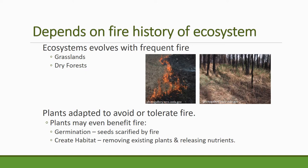Some plants and some systems even require fire to be healthy. Some plants require fire to scarify the seed and germinate after fire. Other habitats really require a cleaning of the slate — a removing of plant biomass so that nutrients can be released, existing plants removed, and new plants adapted to fire can come back into the system. That's a normal cycle of succession in systems adapted to fire.